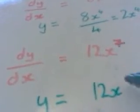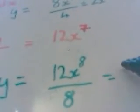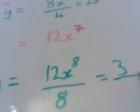Second one: we've got 12x, raise the power by 1, divide by the new power. Now again we've got 12x to the power of 8, so that's 3 over 2 x to the power of 8.